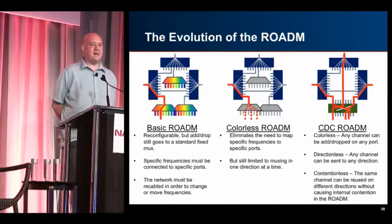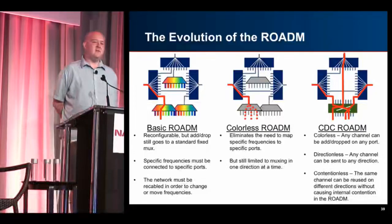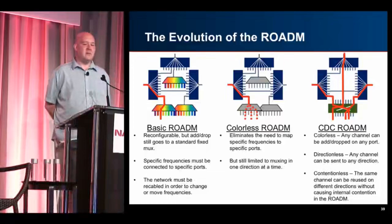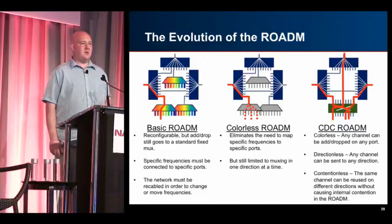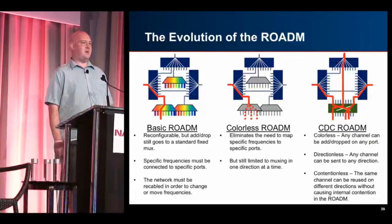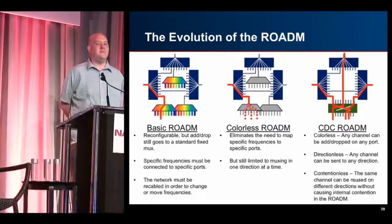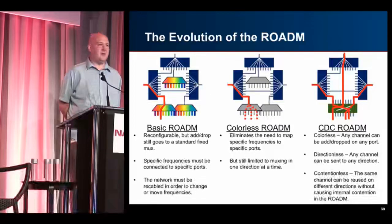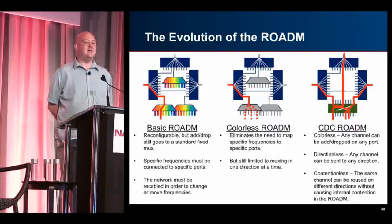The next evolution was the colorless ROADM — integrating the mux so that port one is no longer reserved for channel one and port two for channel two. You can take any port and send any color you want. But it was still limited: you could only send a specific degree to a specific mux and specific set of ports. The latest evolution is what's called CDC — colorless, directionless, and contentionless.